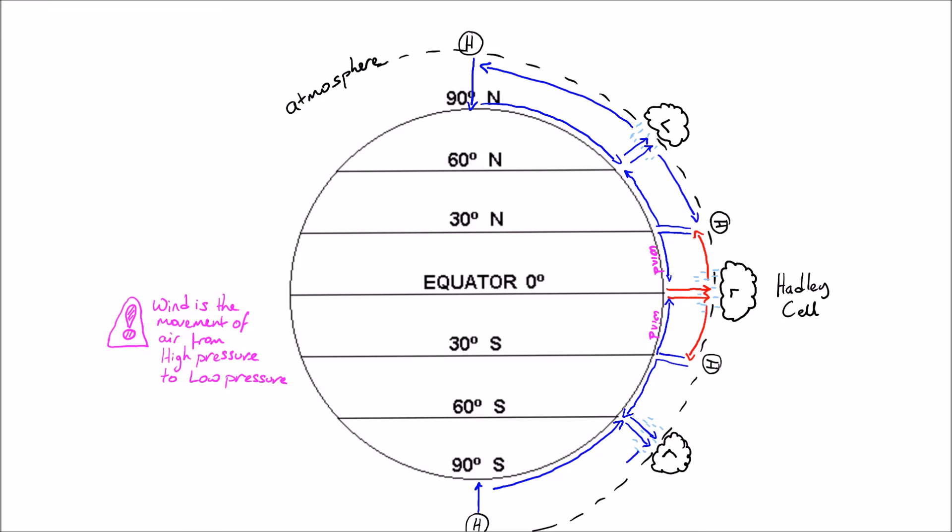Now the middle cell or the two middle cells are called the Hadley cell, and the cell directly above it and below it is called the Ferrell cell, and the two cells at the top are called the polar cell.